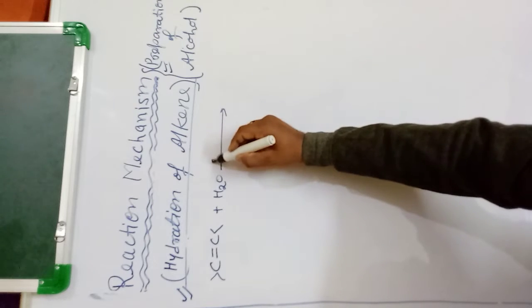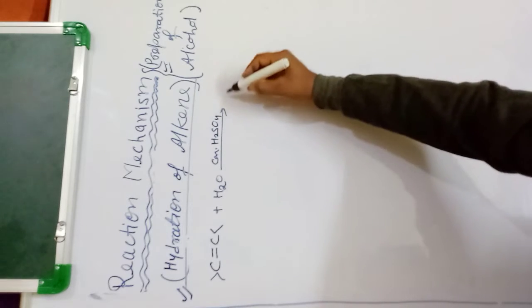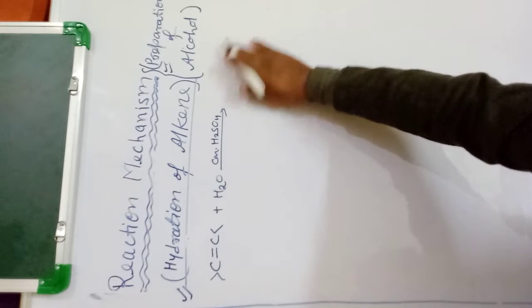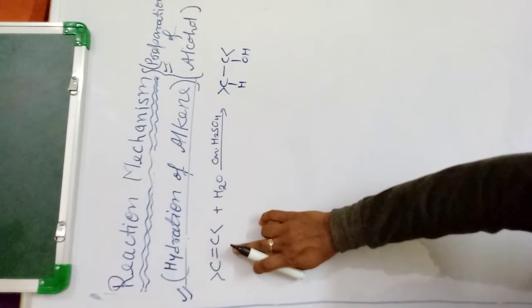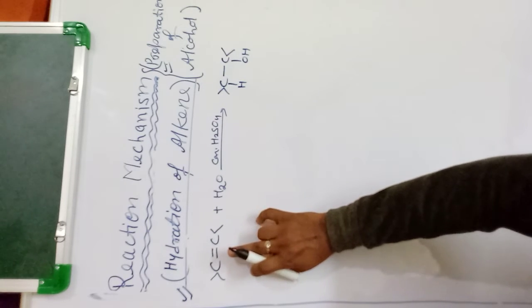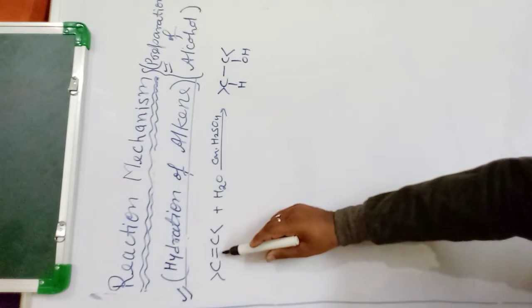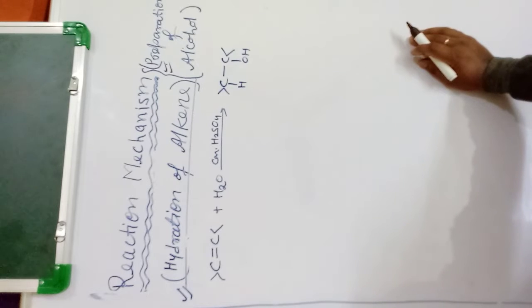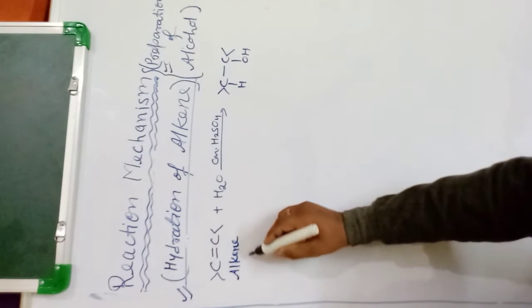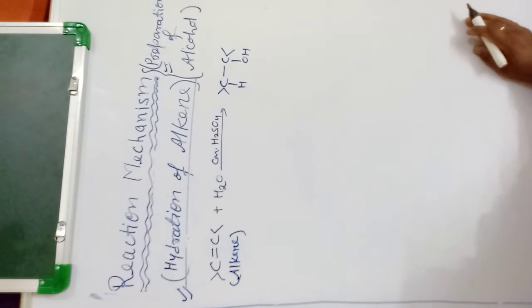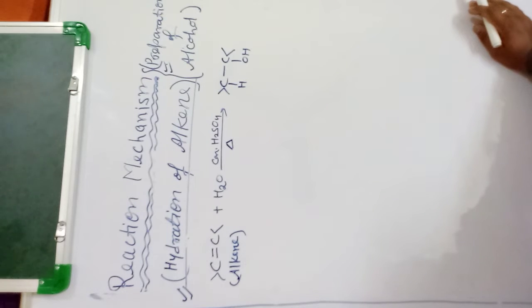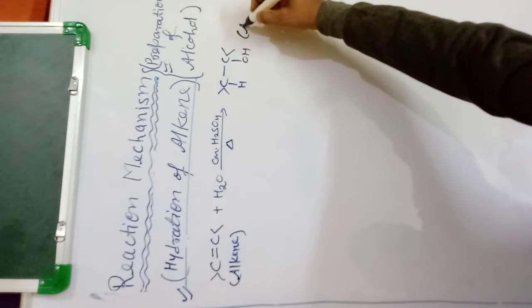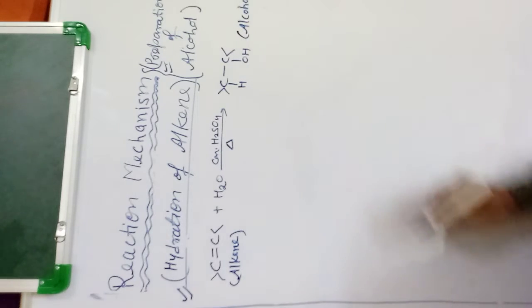The alkene, which has a double bond, will react with water in the presence of concentrated H₂SO₄. This double bond will convert into a single bond, because in an addition reaction of organic compounds, the double bond converts into a single bond — breaking one pi bond and forming two new sigma bonds. In the hydration of alkene, concentrated H₂SO₄ acts as a protonic catalyst.